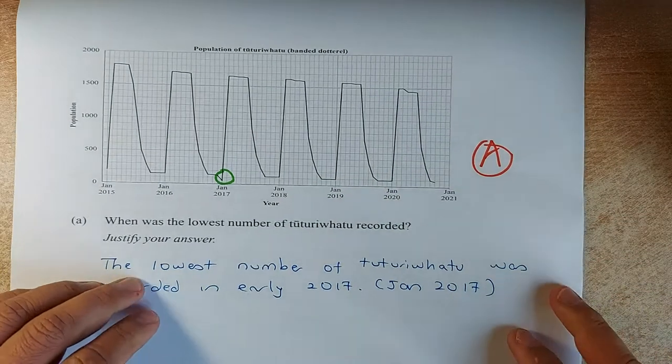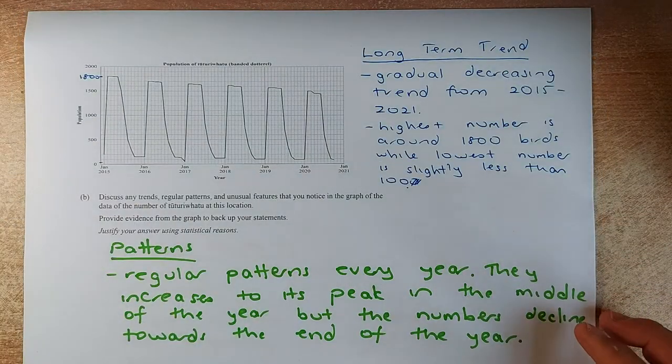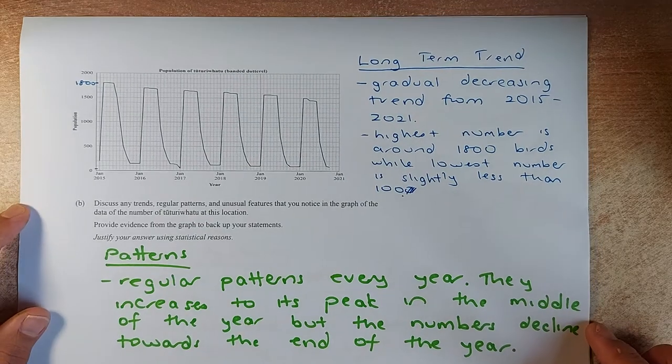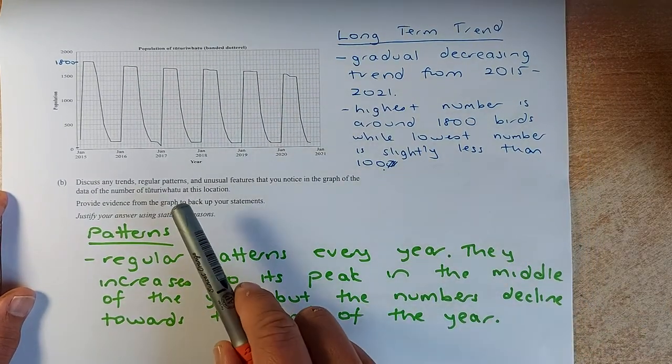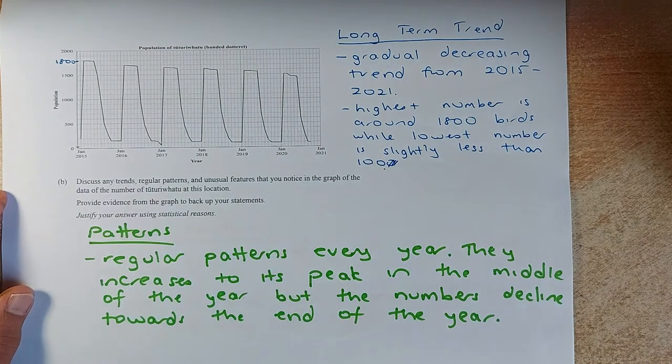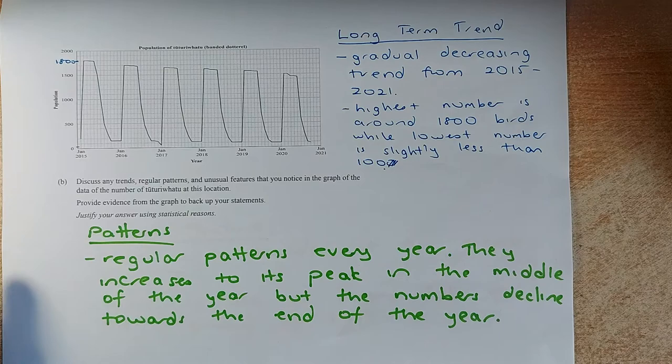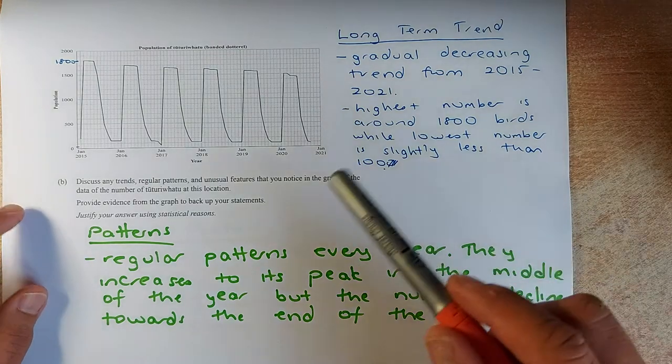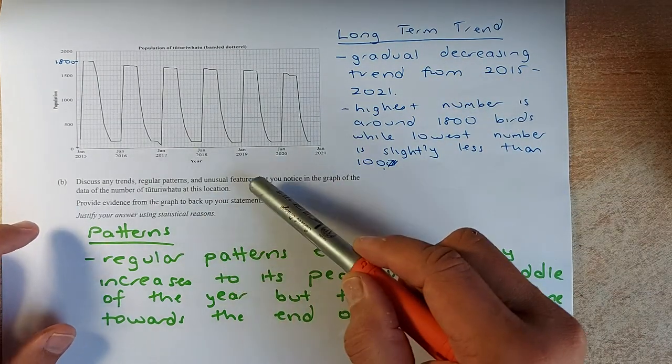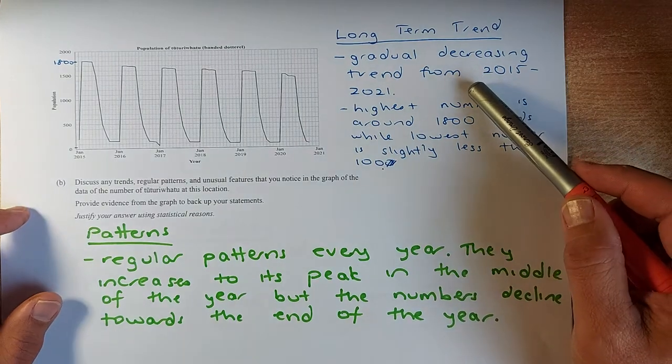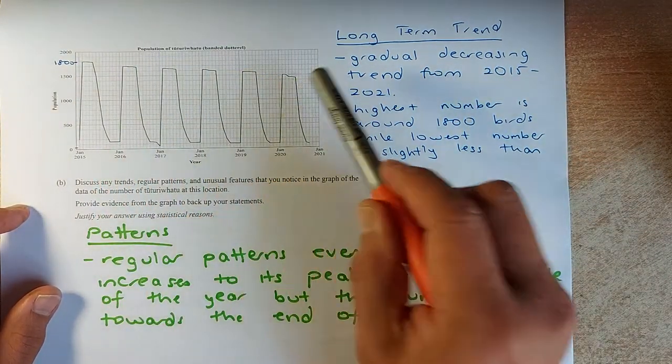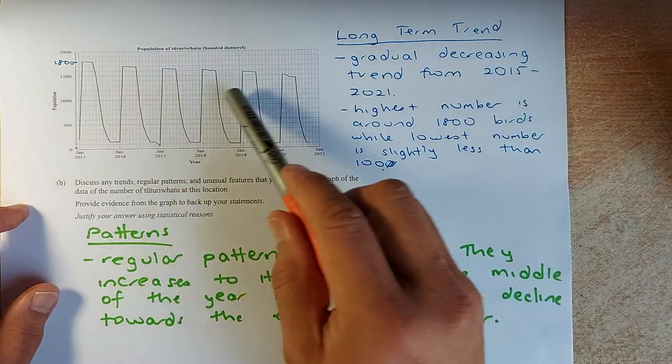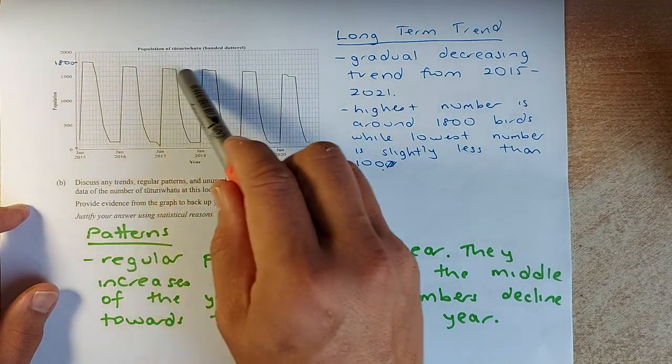Now we shall look at the next part of the question. They tell you to discuss any trends, patterns or unusual features you notice in the graph and provide evidence to justify your statement. So we look at the trends, the patterns and the unusual features. The trend, the long term trend is going down. It's a gradual decreasing trend from 2015 to 2021.